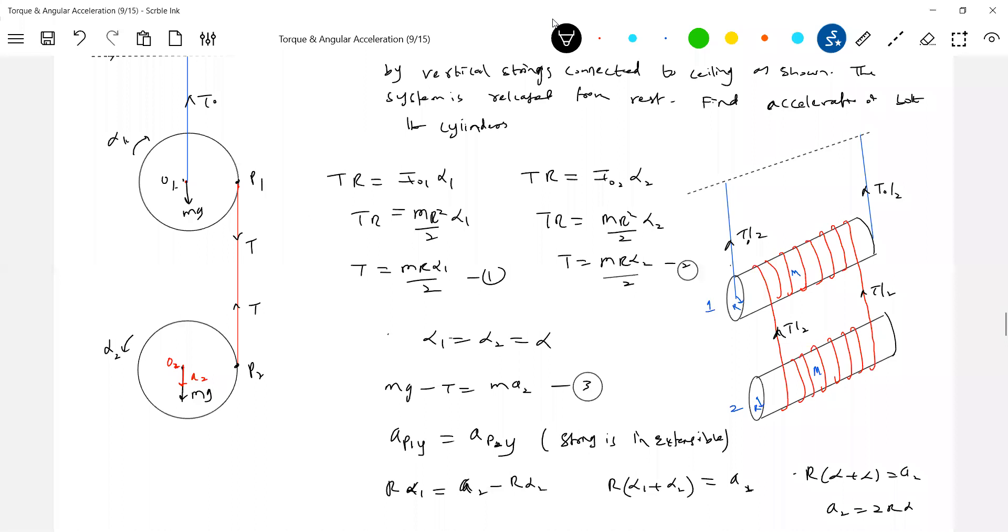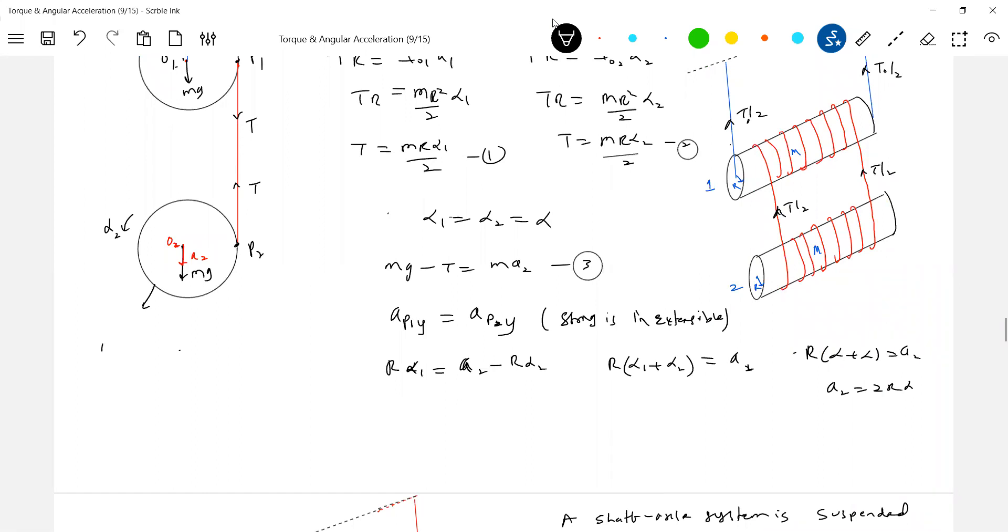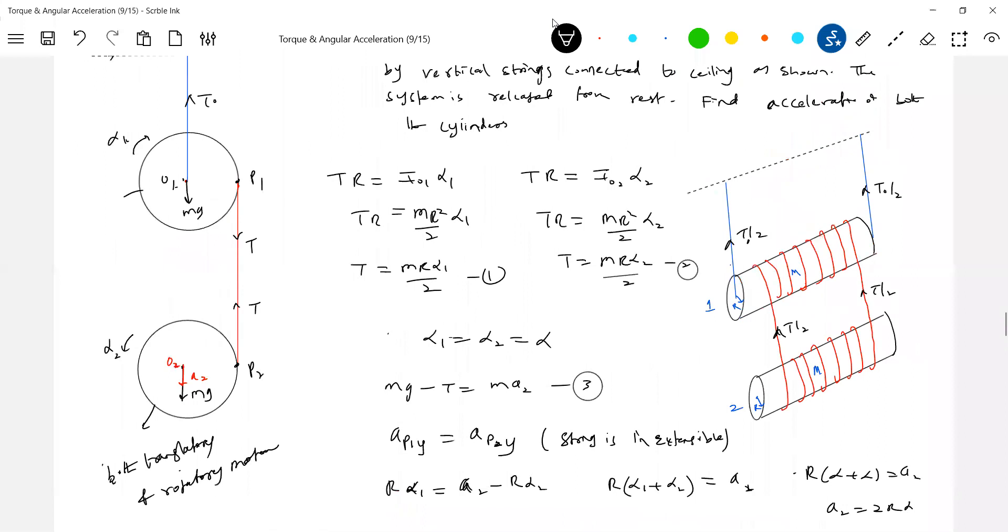Nothing, now we can solve it. Now we can substitute α·r as a2, then T equals m·a2. Solving this will get the answer. So whatever the disk, again it will have both translatory as well as rotatory motion. This cylinder two has both; this cylinder has only rotating motion.